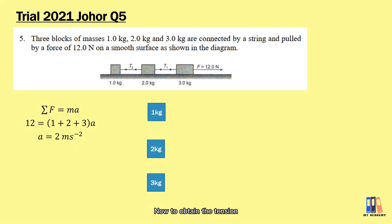Now to obtain the tension, we now require to solve it based on each individual block. For the first block on the left, it is subjected to tension T2 which is labeled in the question. Here apply the formula F = ma, and you can obtain the tension T2 equals 2 newtons.